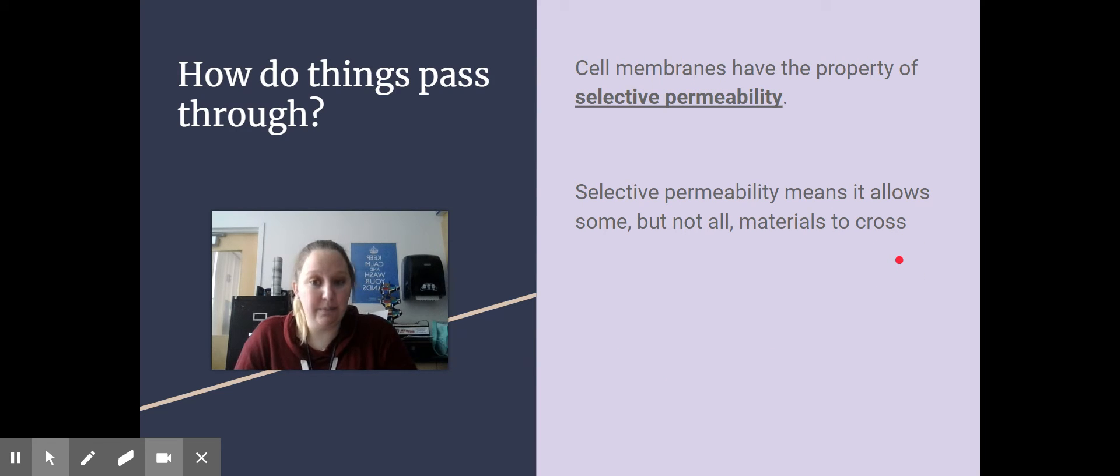The cell membrane is said to be selectively permeable or semi-permeable. These two words mean the same thing, but it means that some molecules are able to pass through the membrane while others are not.